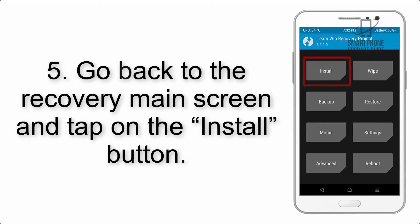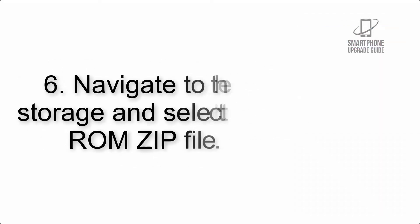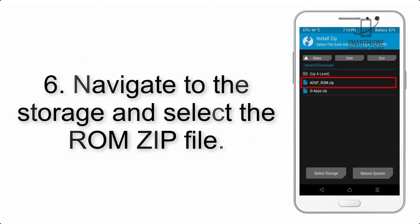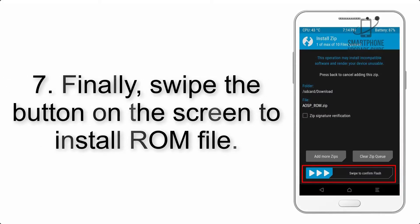Step 4: Swipe the button to wipe the device. Step 5: Go back to the recovery main screen and tap on the Install button. Step 6: Navigate to the storage and select the ROM zip file.